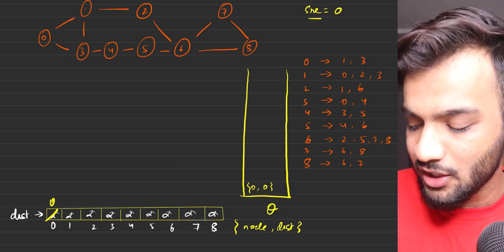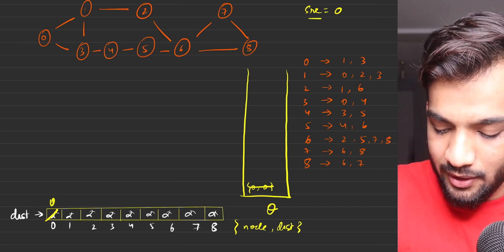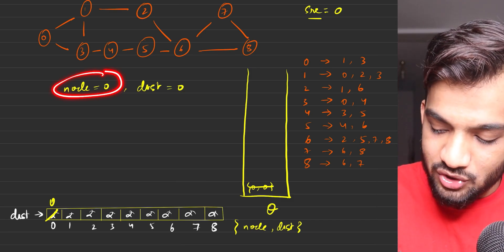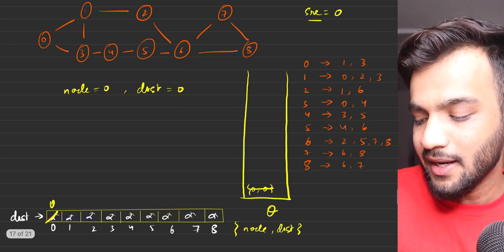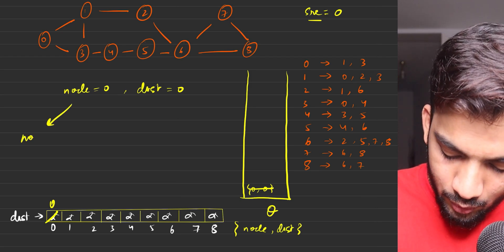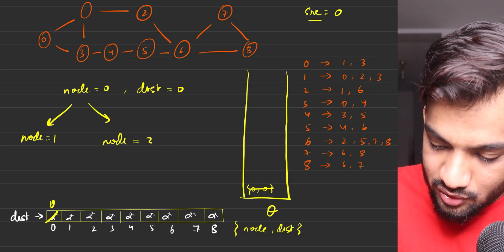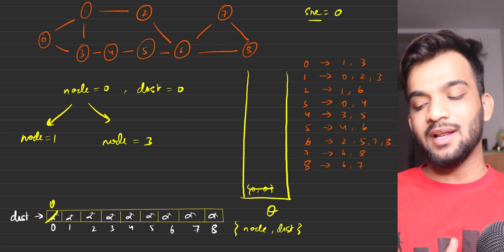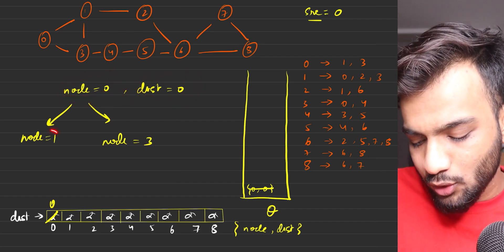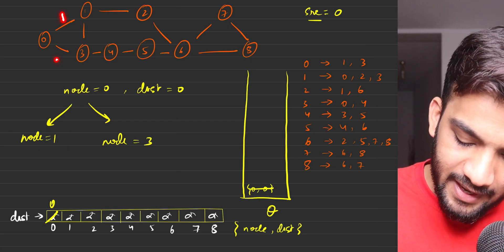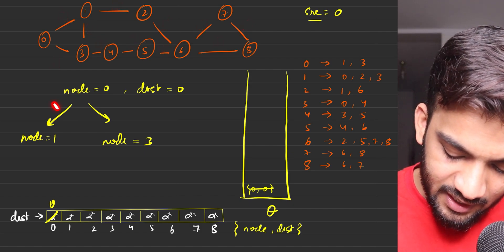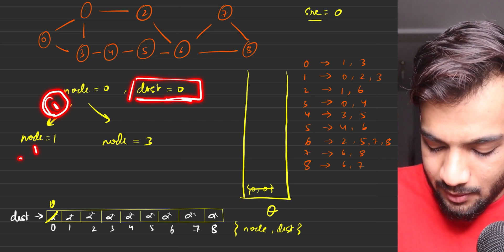Let's start the algorithm. Take out node zero with distance zero from the queue. From the adjacency list, node zero's neighbors are one and three. Since all edges have unit weight, going from node zero at distance zero to either neighbor means the new distance is zero plus one, which equals one.